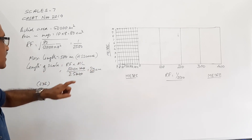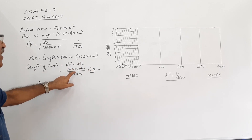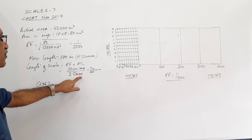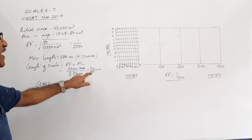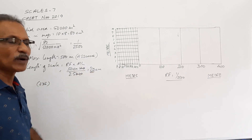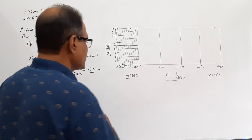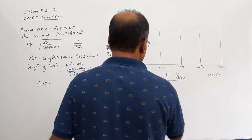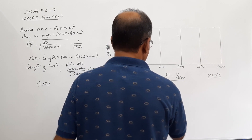Therefore, the length of scale equals RF into maximum length, which equals 500 into 100 — converting into centimeters — divided by 2500. I get 20 centimeters. So 20 centimeters is the length of the scale.